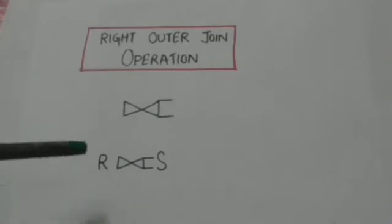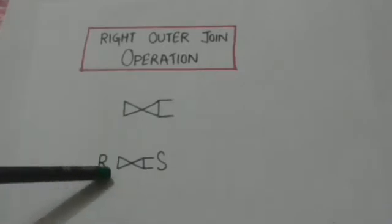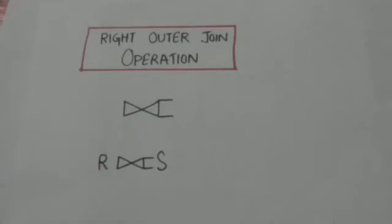The resulting relation of this right outer join operation will have all tuples of right relation S. If a tuple of relation S doesn't have any matching tuple in relation R, then the attributes of relation R will be padded with null values in the resulting relation.